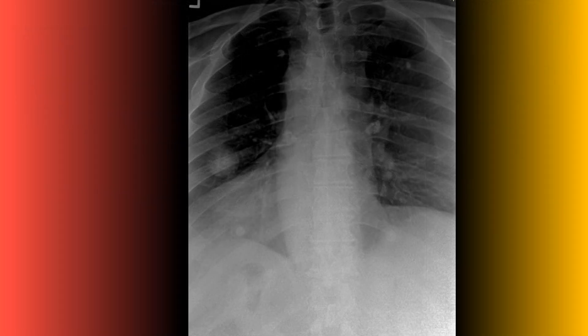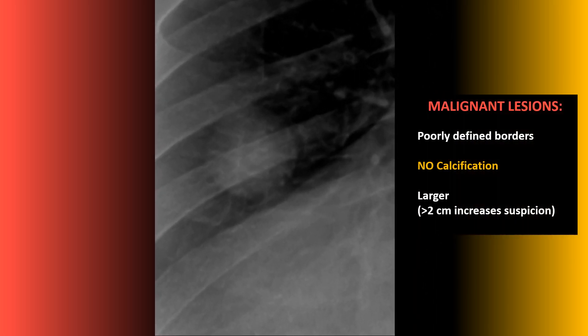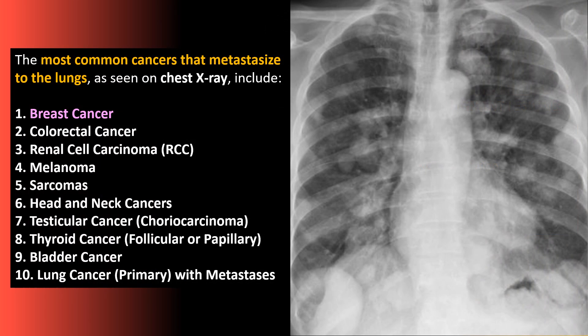On this frontal view of the thoracic spine you should see multiple areas of concern within the lung fields. Zooming in closer, there are very poorly defined borders on the lesion, no evidence of calcification, and it appears larger than two centimeters — all increasing the suspicion for malignancy. Some of the more common cancers that metastasize to the lung fields include breast cancer, colorectal cancer, and renal cell carcinoma, to name a few.